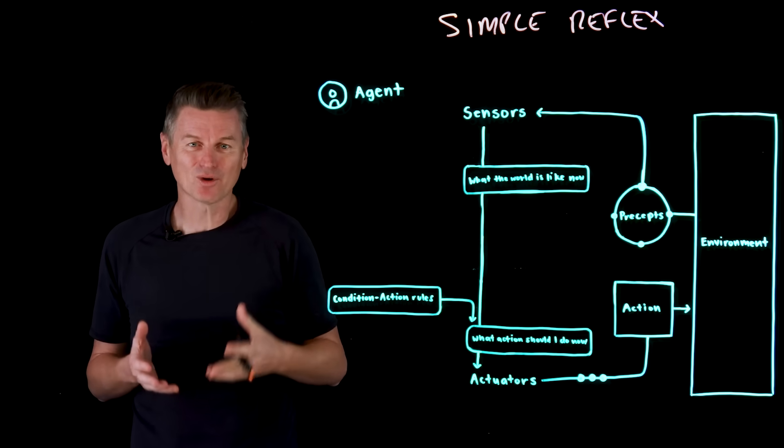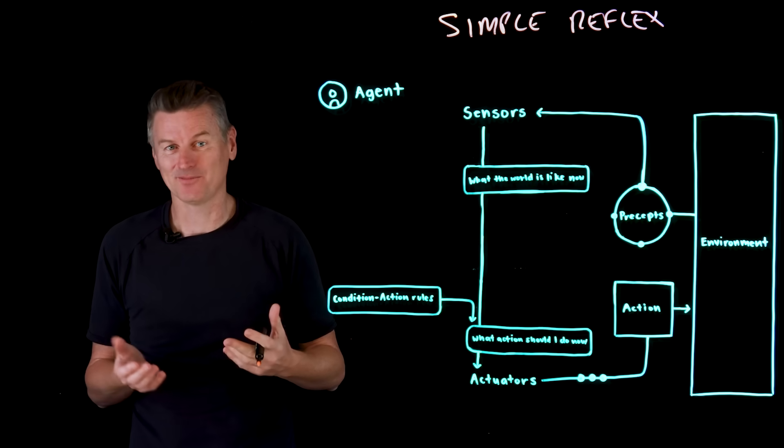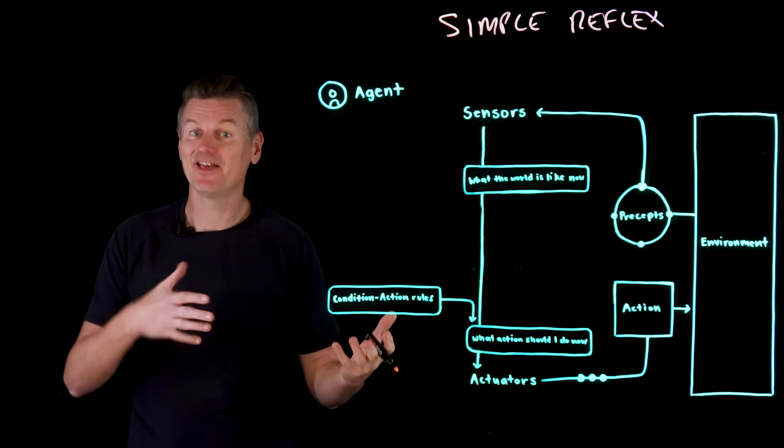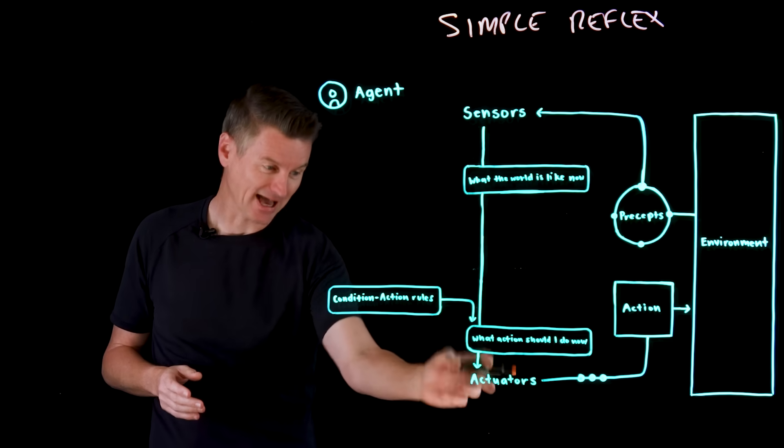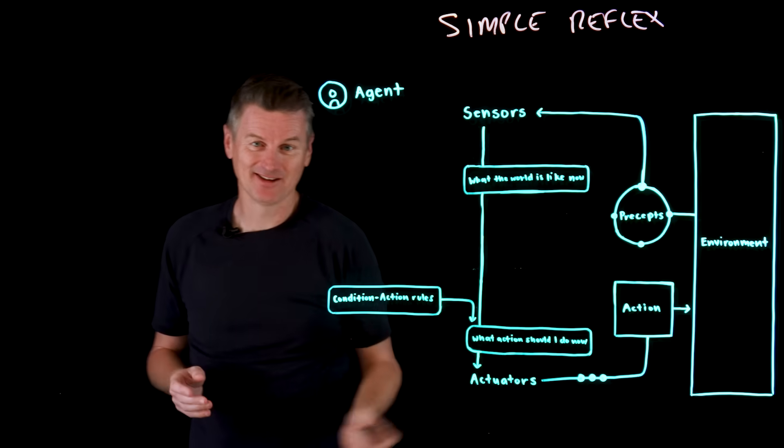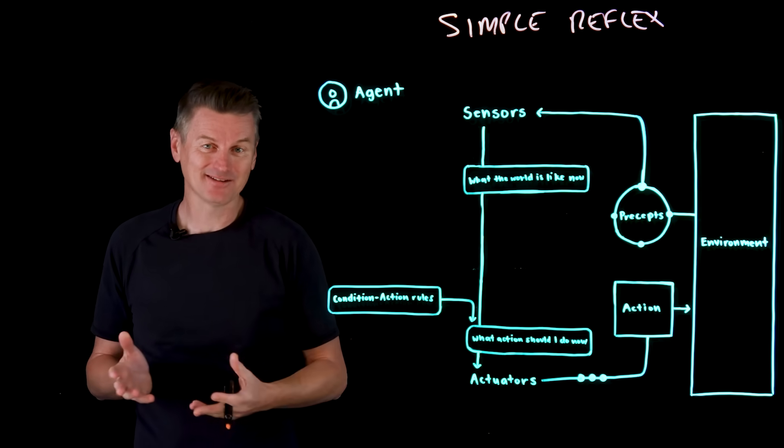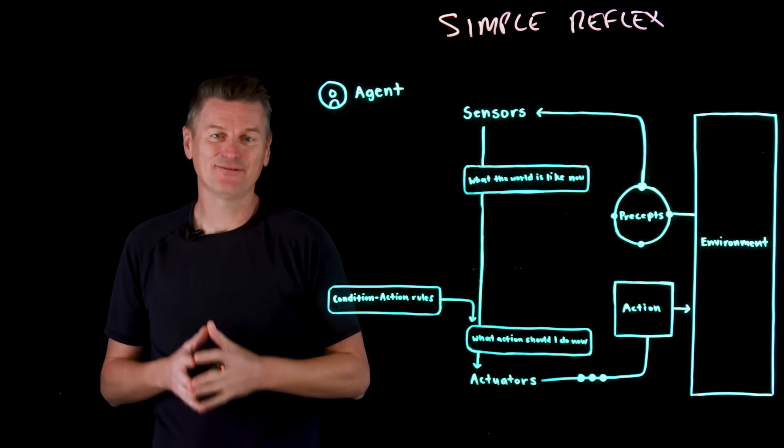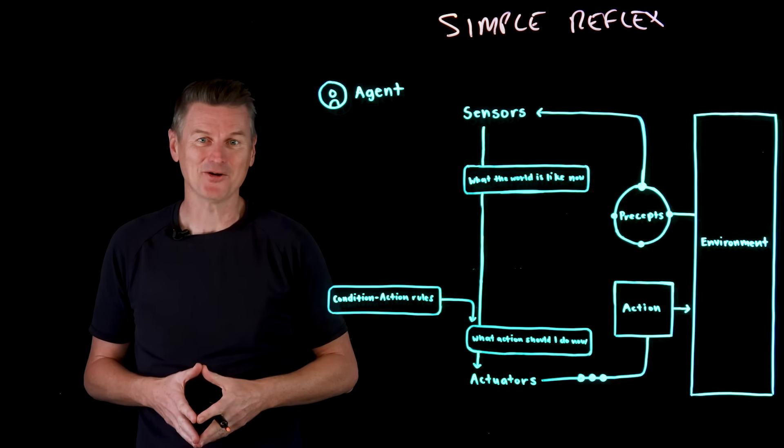These are rules that follow an if condition, then action structure. So if the temperature drops to 18 Celsius, then turn on the heat. That's executed by actuators, and that results in an action, the output behavior by the agent. And that action affects the environment, which in turn affects the next set of percepts, and around and around we go.